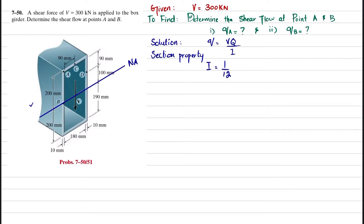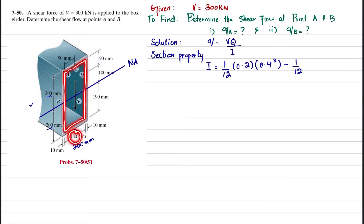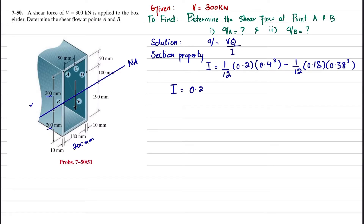So: (1/12) × 0.2 × (0.4)³ minus (1/12) × 0.18 × (0.38)³. The total breadth is 200 mm (0.2 m) and height is 400 mm (0.4 m) for the solid portion. The hollow portion has breadth 180 mm (0.18 m) and height 380 mm (0.38 m). When calculated, the moment of inertia of this box girder equals 0.24359 × 10⁻³ m⁴.